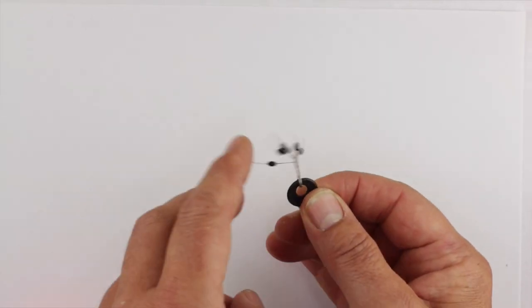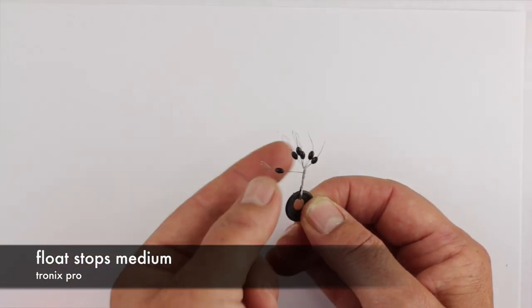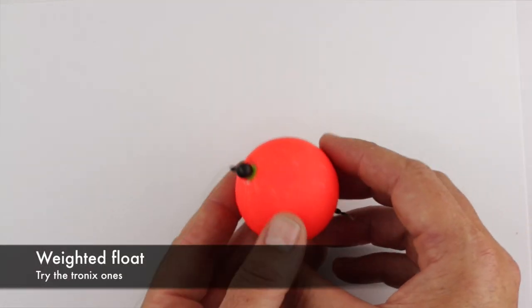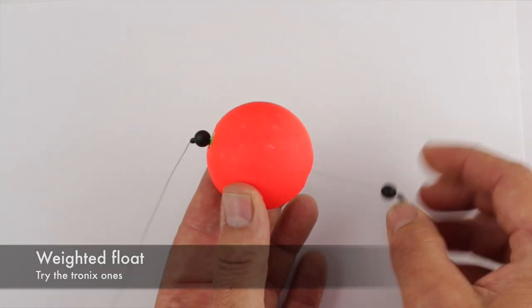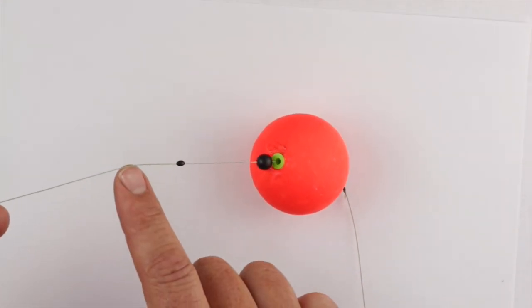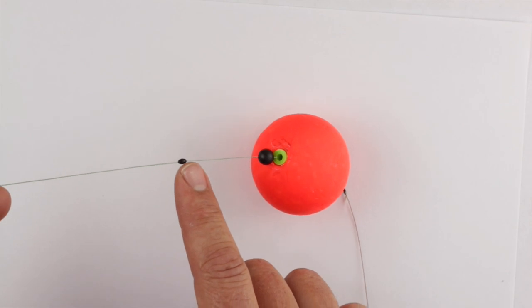You'll need some float stops—these ones are medium—and you're going to put those onto the braid, which is coming from the main line and from your reel. So you put on one of the float stops; you hook those on. They've got a little metal loop thing to put that on.